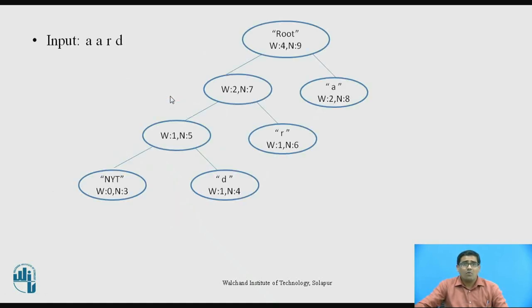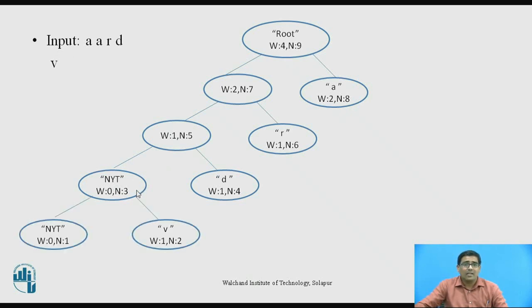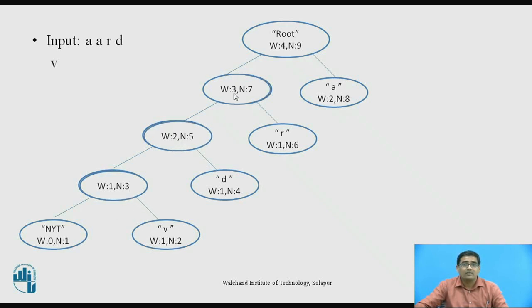Next, transmit V. According to the rule, V is added to the left-hand side of the NYT — NYT becomes weight 0 and N=1, and V is assigned weight 1 and N=2. Updating all parent nodes: 0 plus 1 equals 1 and N=3; then 1 plus 1 equals 2; then 2 plus 1 equals 3; then 3 plus 2 gives the root weight as 5.